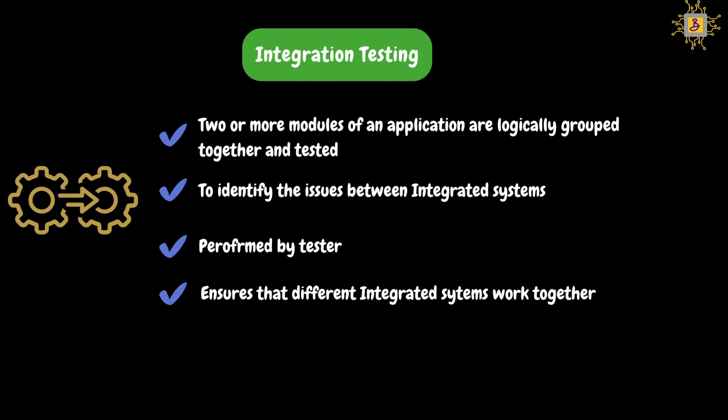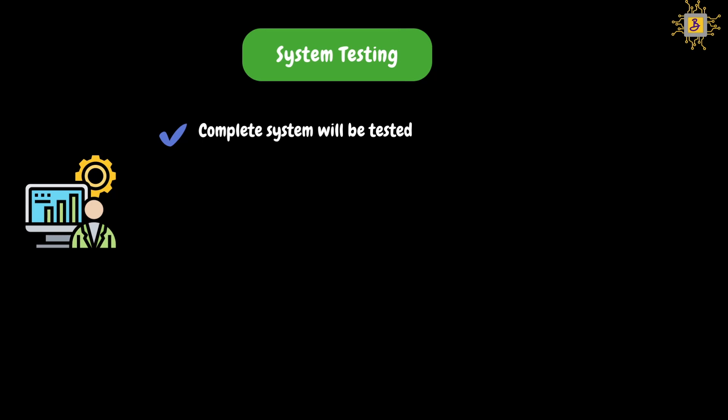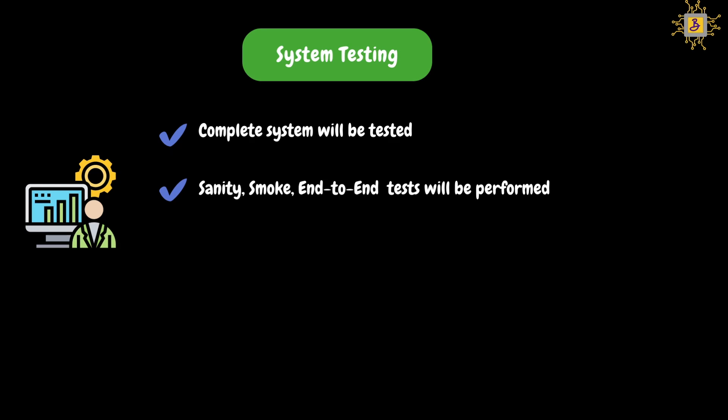Next, let's look at system testing. In this type of testing, the complete application or system will be tested. In our Gmail example, we will be testing all the modules of the application as a whole system. Generally, sanity testing, smoke testing, and end-to-end testing methodologies will be followed. Sanity testing means a quick check to validate if new code changes are working properly without any new issues. Smoke testing ensures major functionalities are working as per requirements. End-to-end testing ensures the software flow from start to finish is working as per requirements. This testing will also be performed by functional testers.